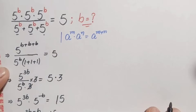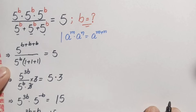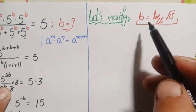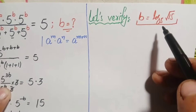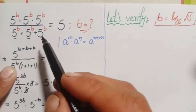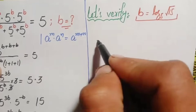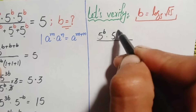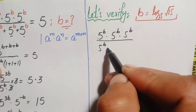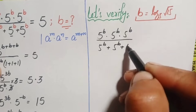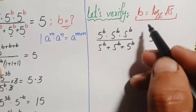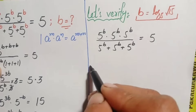Now we will verify the value of b. The value of b is log of square root of 15 with base 5. We rewrite the original problem: 5 raised to power b times 5 raised to power b times 5 raised to power b, divided by 5 raised to power b plus 5 raised to power b plus 5 raised to power b, equals 5. Let's simplify the left hand side before substituting b.